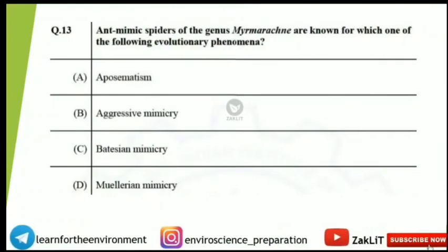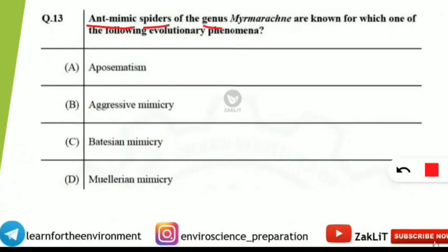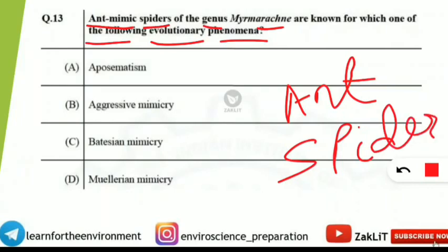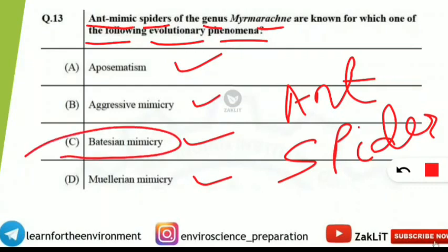The next question asks: ant-mimicking spiders of the genus Myrmarachne are known for which evolutionary phenomenon — aposematism, aggressive mimicry, Batesian mimicry, or Müllerian mimicry? The correct answer is aggressive mimicry. Since ants and spiders are different, unrelated species, this is not Batesian or Müllerian mimicry (which involve related organisms). When one species mimics a completely different, unrelated species, it is classified as aggressive mimicry.